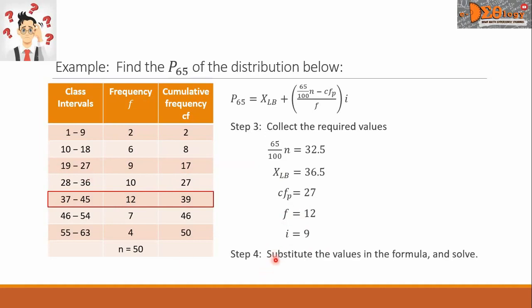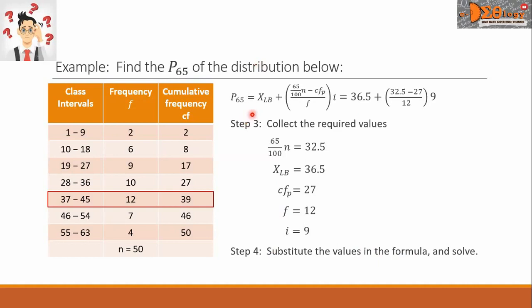For step 4, let us substitute the values in the formula and solve. The X sub LB is now 36.5. Plus, this value here is the 32.5 minus CF sub P is 27. All over F, which is now equal to 12. This fraction is multiplied by I, and we substitute the value of 9.